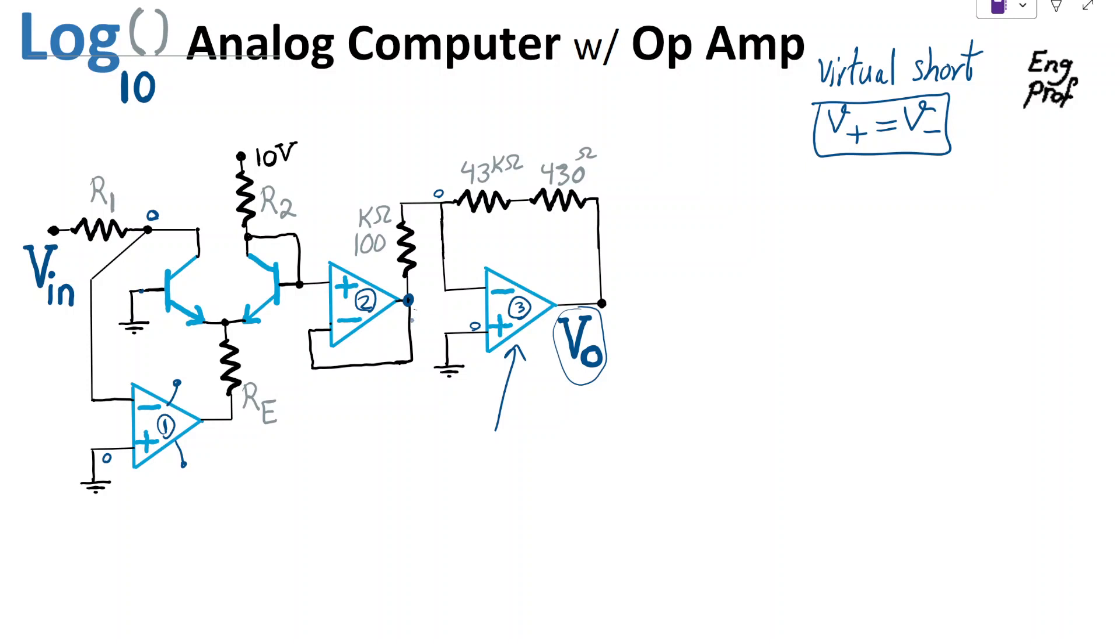To get to Vout, I need to get to this node, which is Vx. This second op-amp, obviously, is a buffer, meaning that it passes the voltage with a gain of 1. Vx is connected to negative input terminal, and because of virtual short, the positive input terminal should also be Vx.